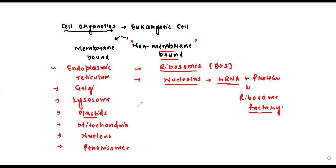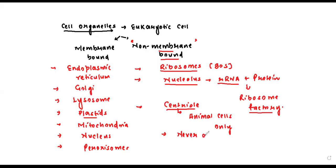The third non-membrane bound organelle is the centriole — a pair of centrioles forming the centrosome. Something special about centrioles: they are present only in animal cells, not plant cells. Centrioles undergo duplication only — centrioles never divide. Mitochondria divide, but centrioles do not divide.